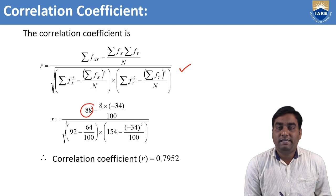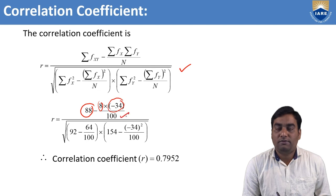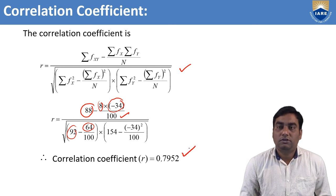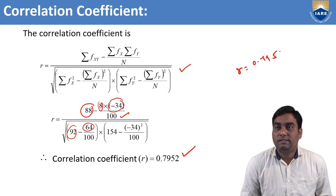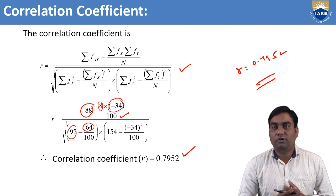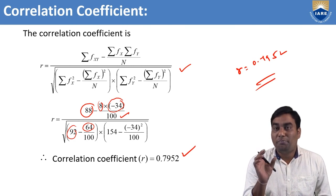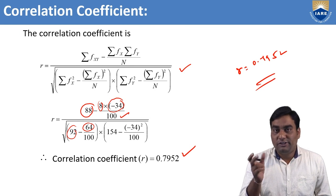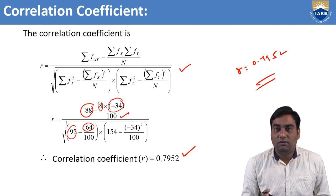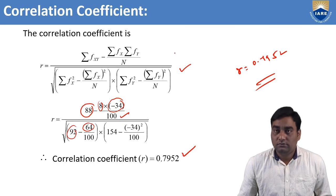Now substituting into the formula: r equals [sigma(fXY) minus sigma(fX) × sigma(fY)/n] divided by the square root of [sigma(fX²) minus (sigma(fX))²/n] × [sigma(fY²) minus (sigma(fY))²/n]. With sigma(fXY) = 88, sigma(fX) = 8, sigma(fY) = −34, n = 100, sigma(fX²) = 92, sigma(fY²) given, we compute r = 0.79. This is the correlation between marks in accountancy and marks in statistics. Use this formula whenever the problem consists of bivariate data — that is, when both variables are defined in interval form.